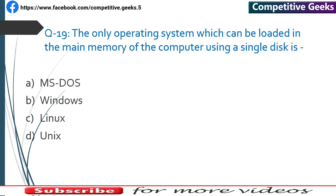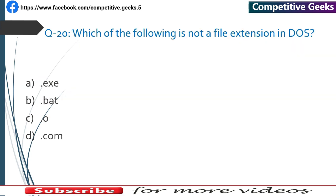Number 19: The only operating system that can be loaded into the main memory of the computer using a single disk is MS-DOS — Microsoft Disk Operating System.